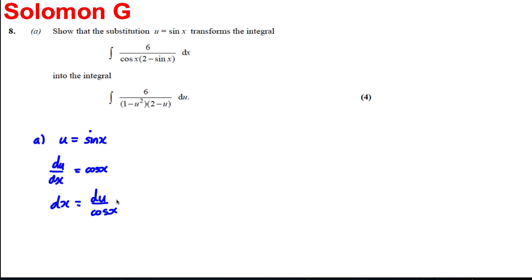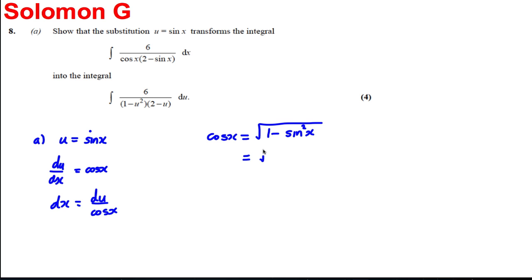Let's also change everything in terms of u. If u is equal to sin x, then cos x must be equal to the square root of 1 minus sin²x, which equals the square root of 1 minus u². Therefore dx is going to be du over the square root of 1 minus u². Now we're in a position to transform this integral.